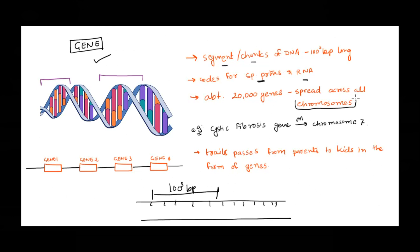In humans, about 20,000 genes are there in our DNA — the whole, complete DNA. We might have heard about traits or specific characteristics that we get from our parents — that is because of the genes, because these genes get passed on from one generation to others. So genes are nothing but specific chunks or specific sequences of nucleotides that code for protein and RNA.